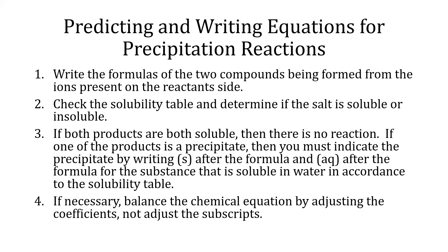What are the guidelines in writing equations for precipitation reactions? One: write the formulas of the two compounds being formed from the ions present on the reactant side. Two: check the solubility table and determine if the salt is soluble or insoluble. Three: if both products are soluble, then there is no reaction. If one of the products is a precipitate, then you must indicate the precipitate by writing (s) in parentheses after the formula, and (aq) in parentheses after the formula for the substance that is soluble in water.